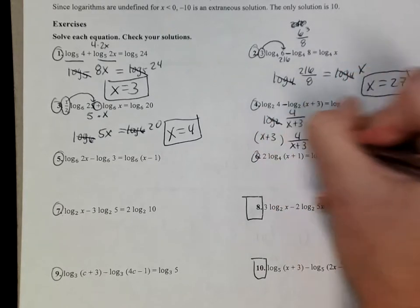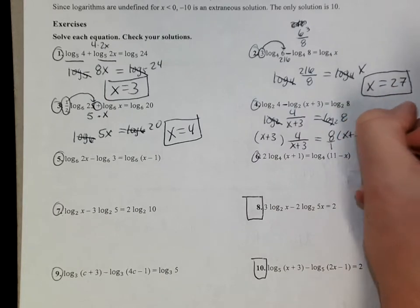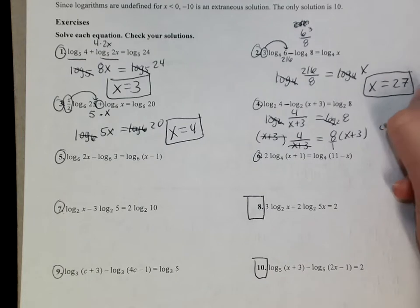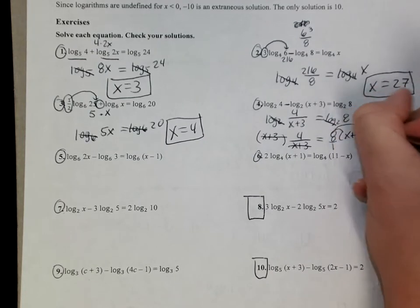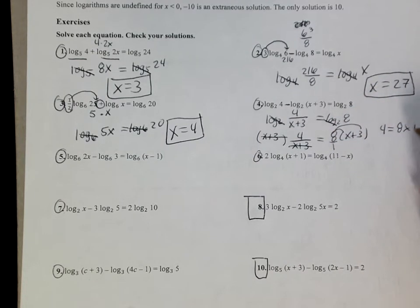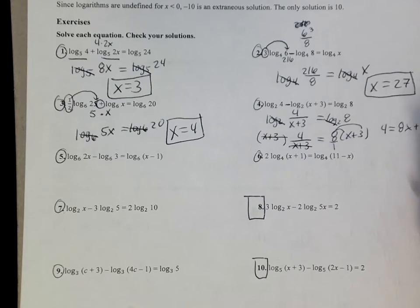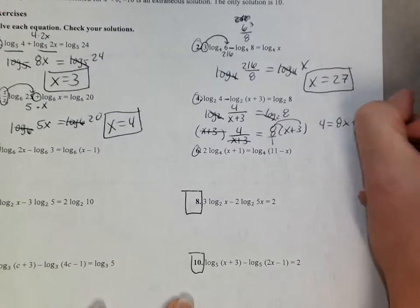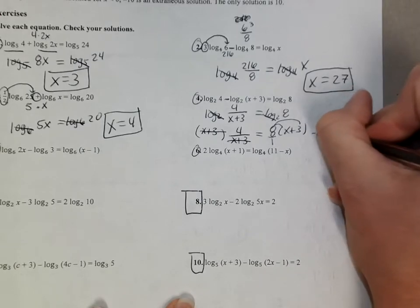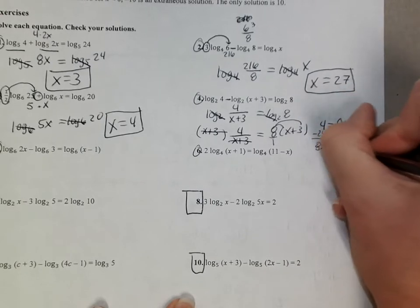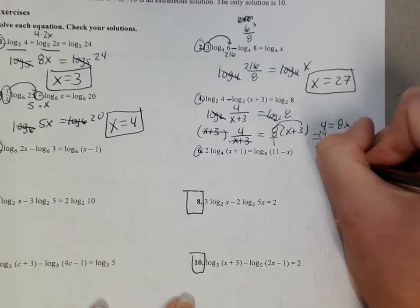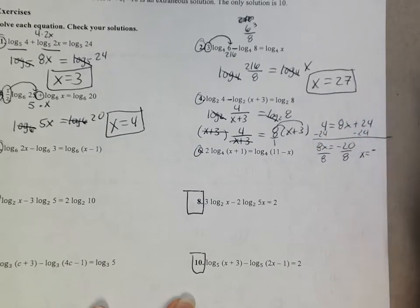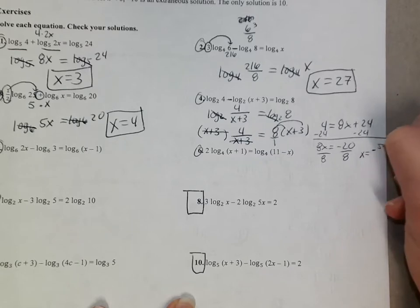Two ways you can do it. One is you can put the 8 over 1 and solve it like a proportion with your cross multiply. Sometimes I do that. Sometimes I just say, well, I need to get this x out of the denominator. So I'm going to multiply both sides. This will cancel. That gives me 4 equals, and if you don't mind, I'll go ahead and distribute. 8x + 24. And I subtract the 24. I get negative 20. 8x equals negative 20. Divide by 8. That equals x equals negative 5 over 2.